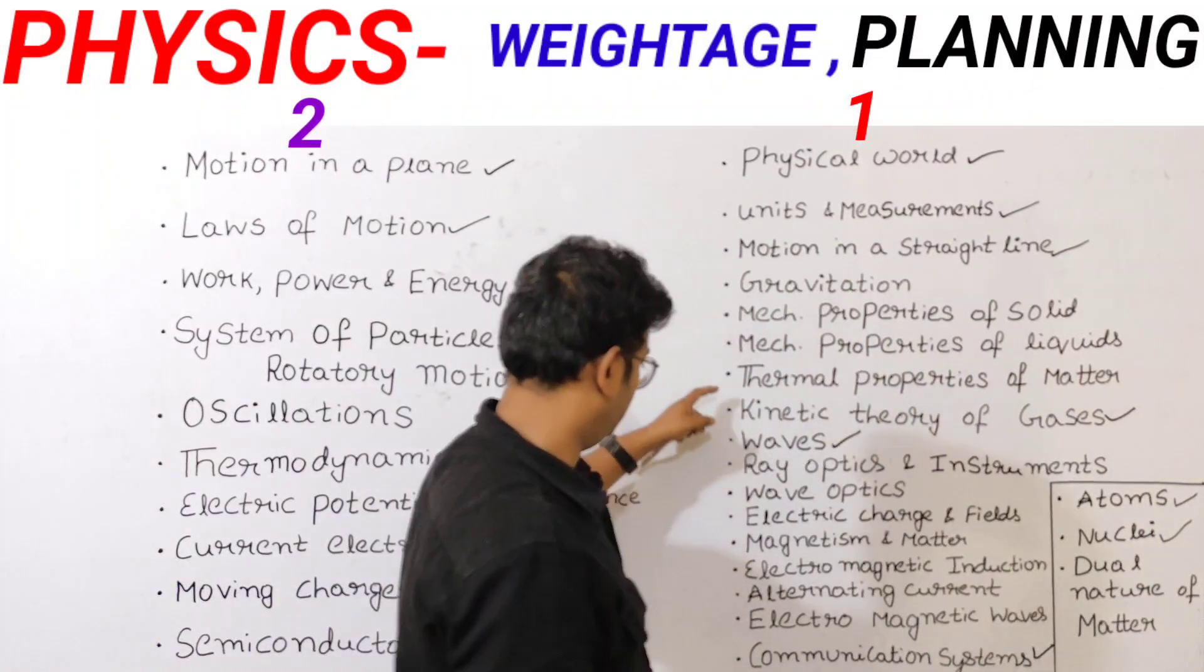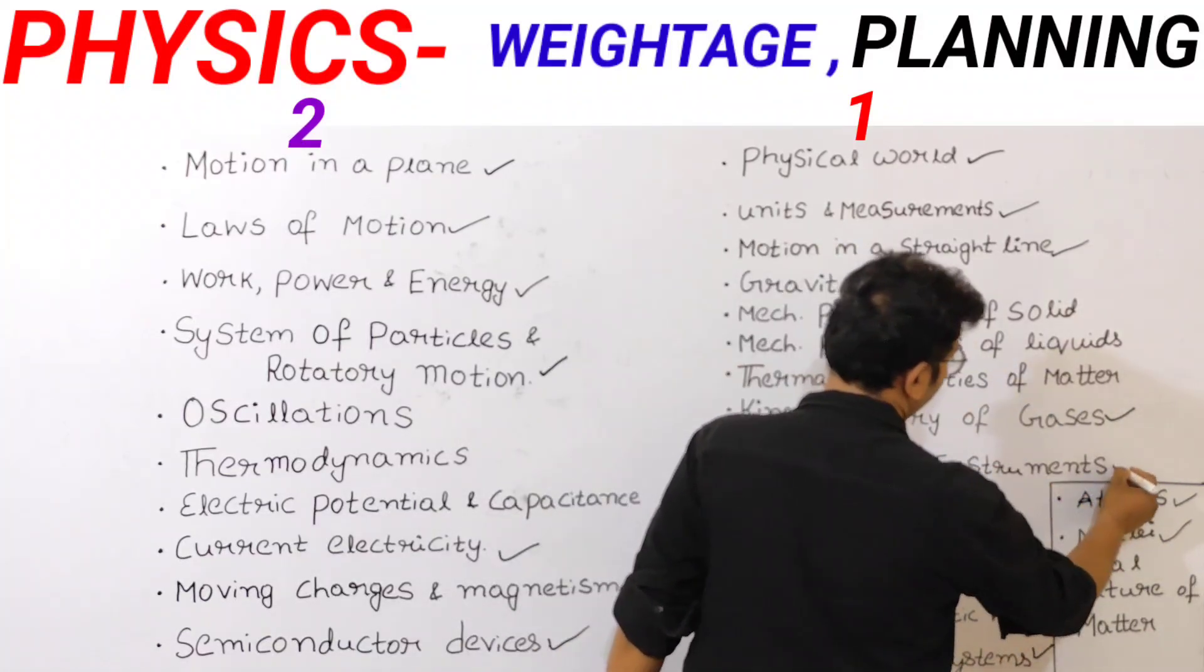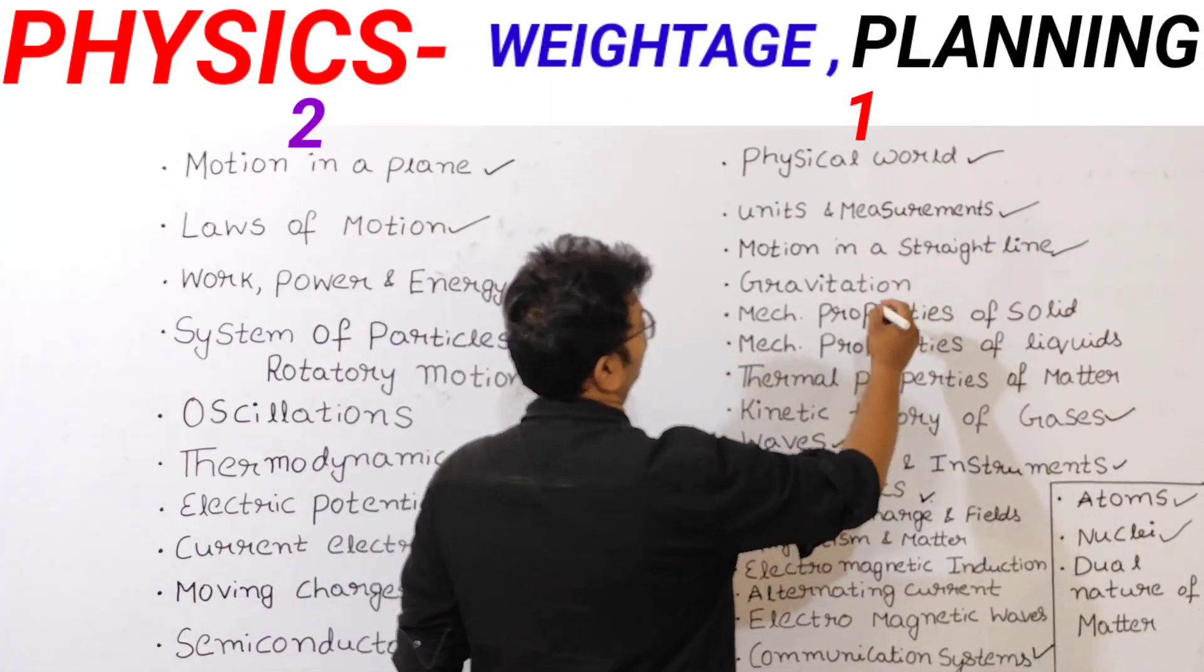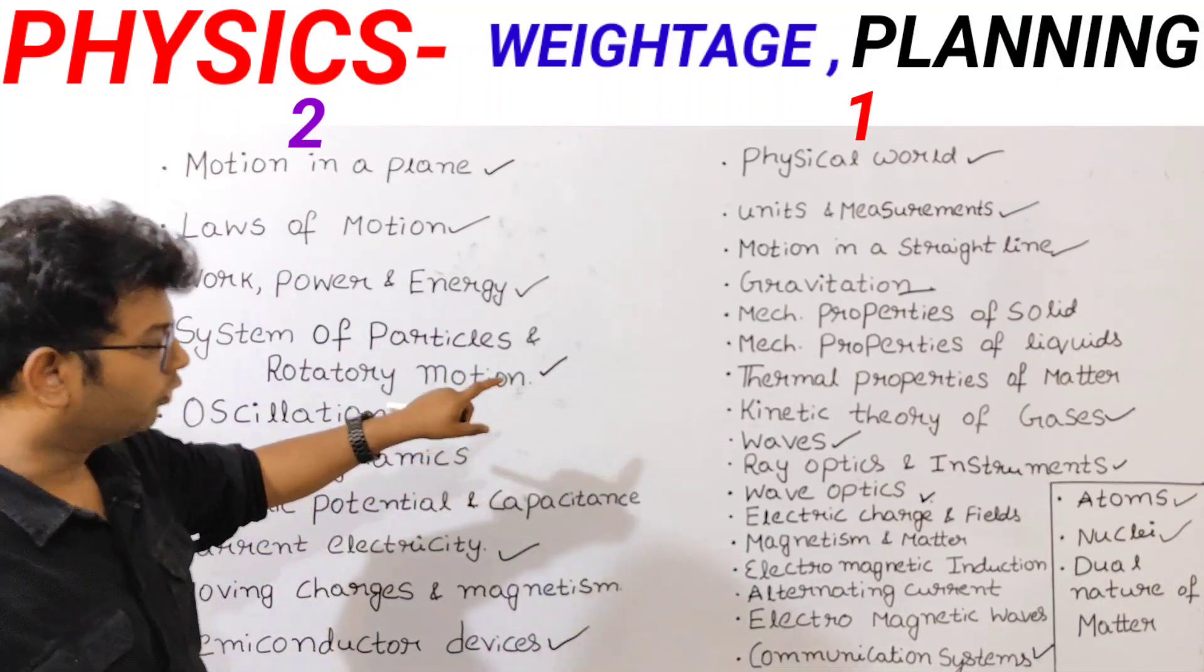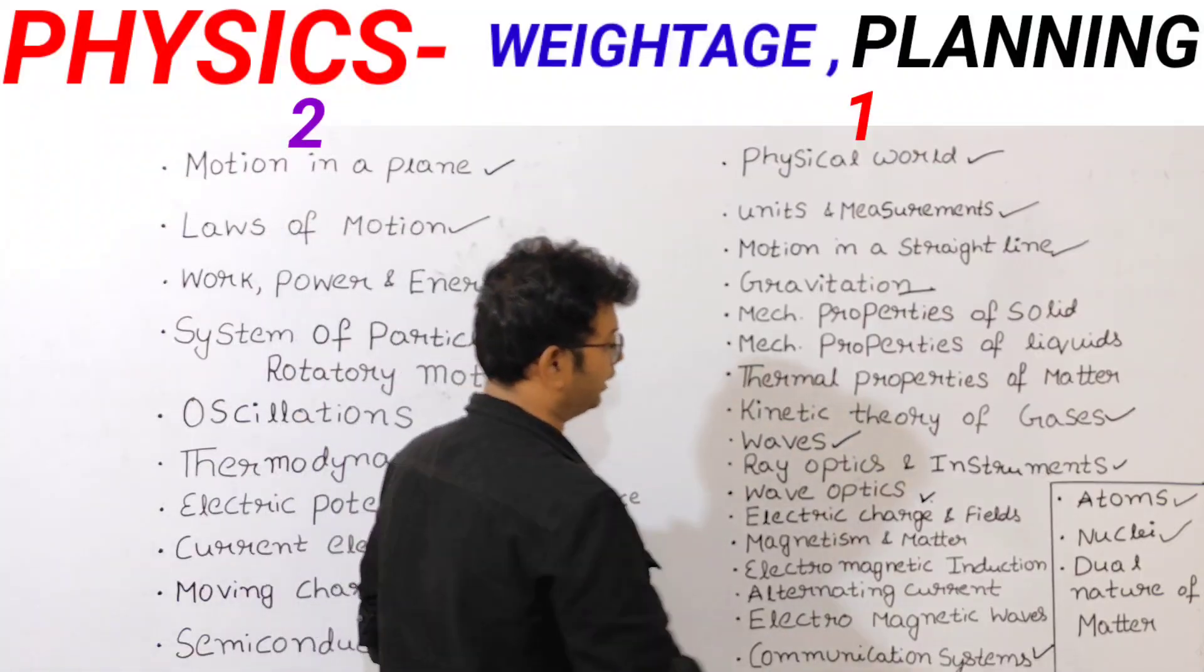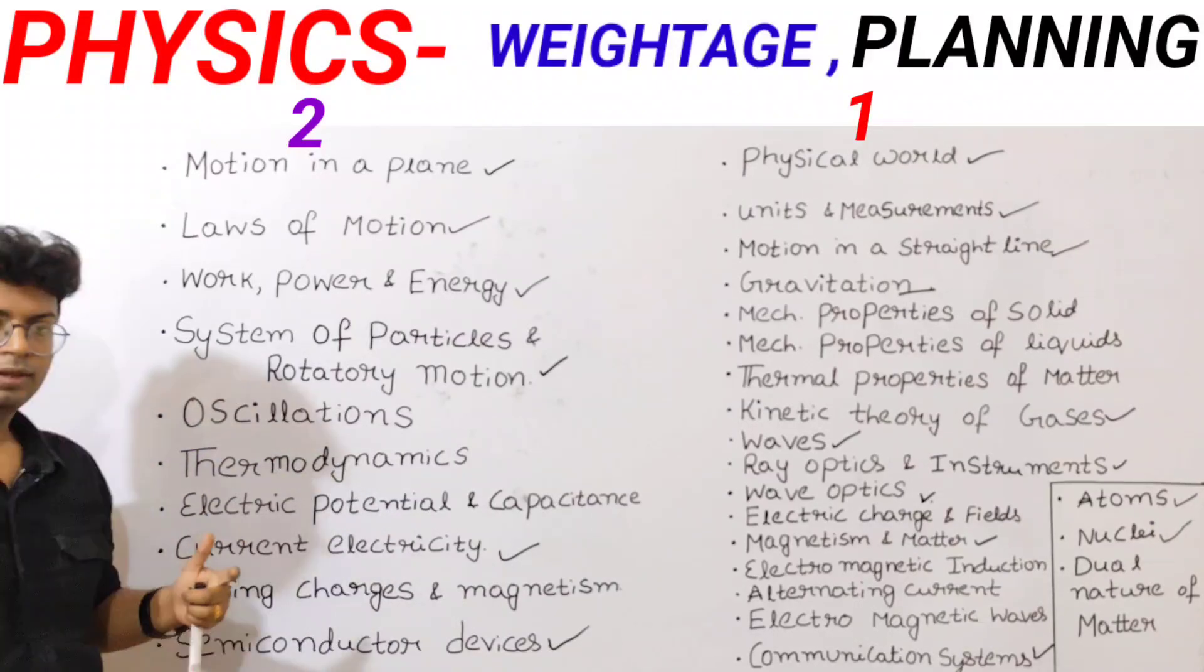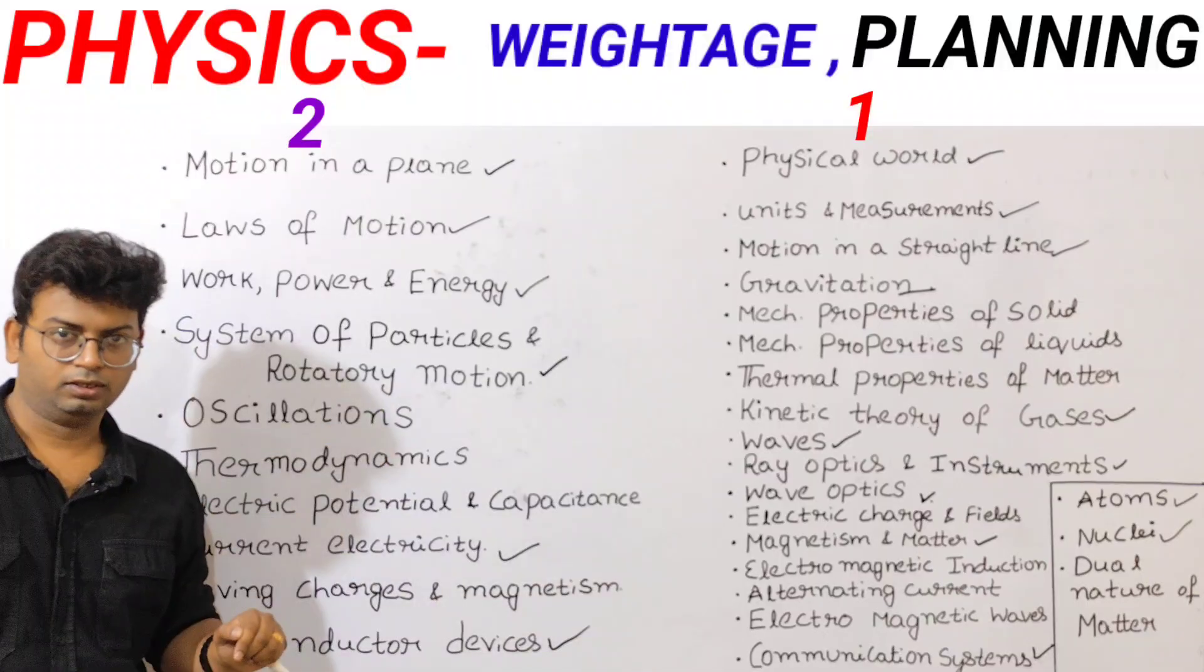And next, wave optics. In this wave optics, we choose the minimum, and the same thing. So we choose the minimum. And in gravity, we choose the basic form. So when you focus on these chapters, you focus on the magnet and matter. So first, choose these chapters. Then you choose the magnet and matter.